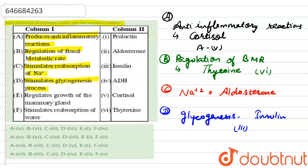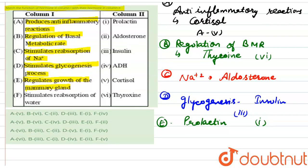Moving to the next one: regulate growth of mammary gland. The hormone responsible for growth of the mammary gland is prolactin. So this corresponds to the first option.